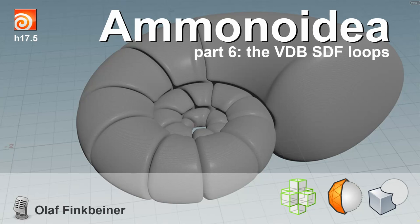Welcome, Houdini community all around the globe, to part 6 of my M&I tutorial. This is the one where the magic happens. VDBs, volumes, and SDFs — signed distance fields — are introduced. And of course, we meet loops again.